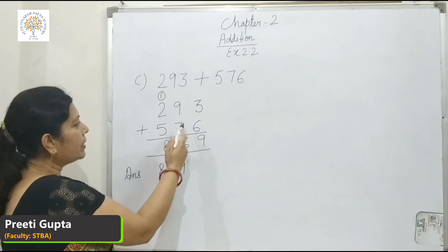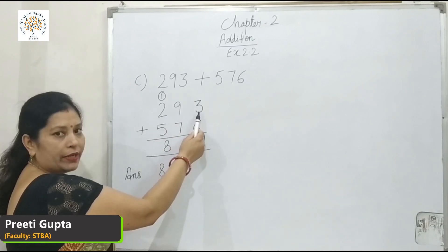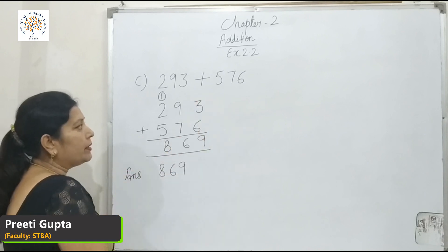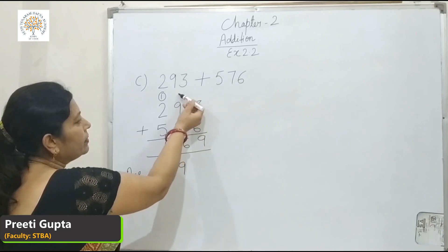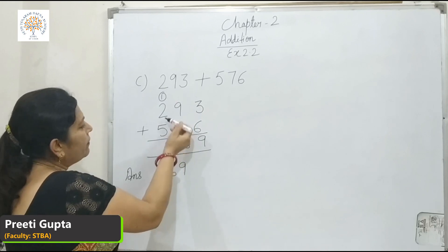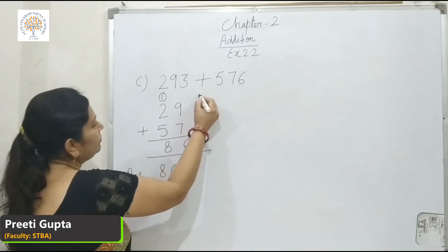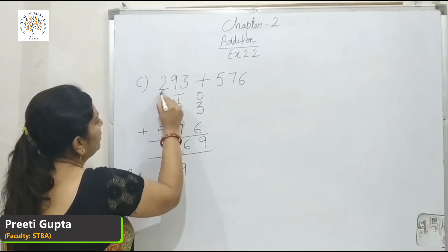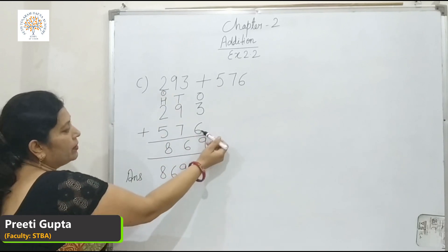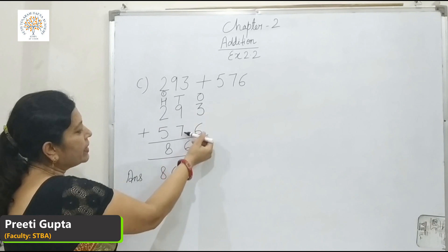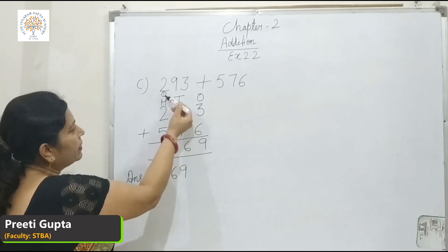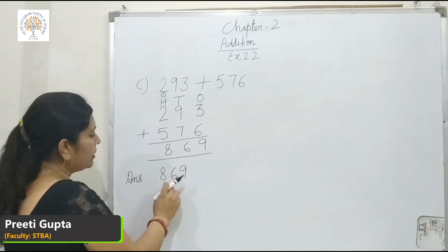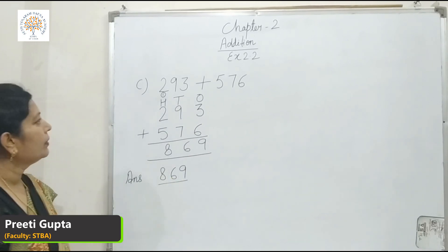I repeat: 293 plus 576. 6 and 3 are in the 1's place, 7 and 9 are in the 10's place, and 5 and 2 are in the 100's place. 6 and 3 is 9. 9 and 7 is 16 — write 6 here, carry 1 here. 2 and 1 is 3, and 5 and 3 is 8. Answer is 869.